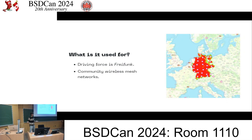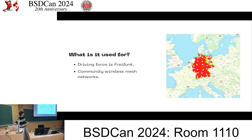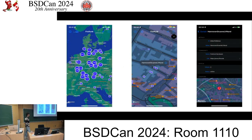The driving force in Batman's development was Freifunk, which means 'free radio' in German. It's a big community of wireless networks in Germany. There's a heat map showing where nodes are primarily located - it's pretty German. They have an app where you can see a map, see where you are, and see nearby nodes with information about how many clients are connected.